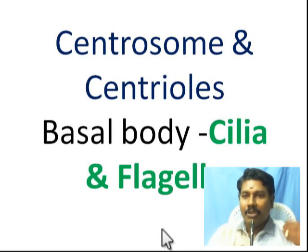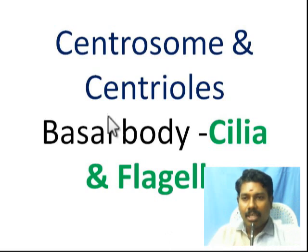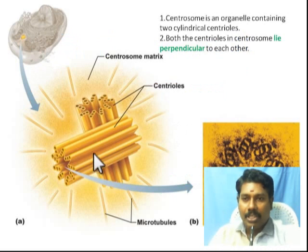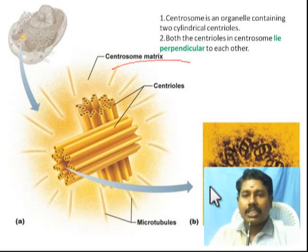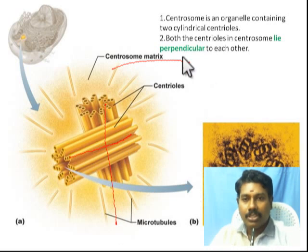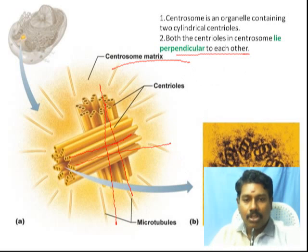Welcome. In this video, we will look at the important organelle - the centrosome and centrioles. Here you can see the structure of centrioles. In the animal cell, you can see the centrosome. The whole structure is termed the centrosome. Inside the centrosome, there are two centrioles. Here one centriole and another centriole - two centrioles that lie opposite to each other, perpendicular to each other, that is 90 degrees to each other. Centrioles play an important role in cell division.